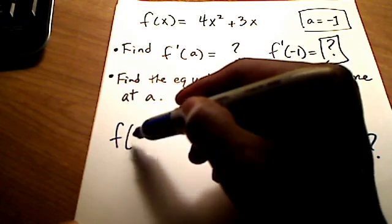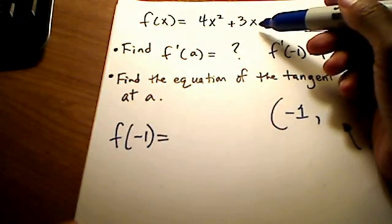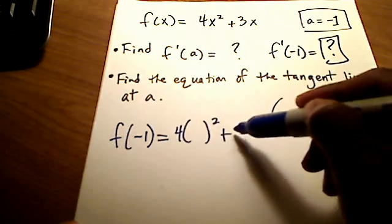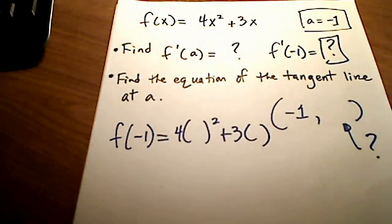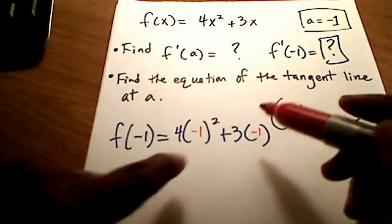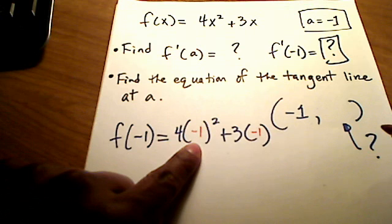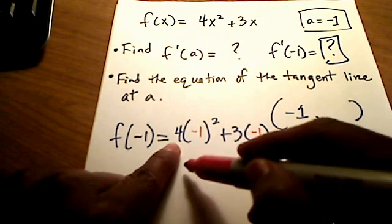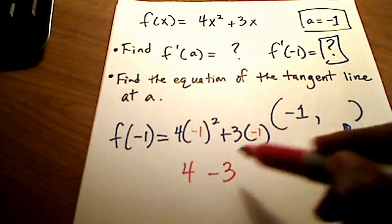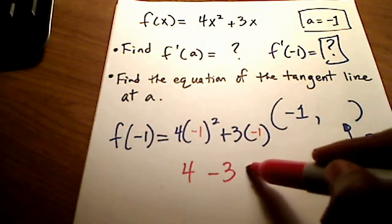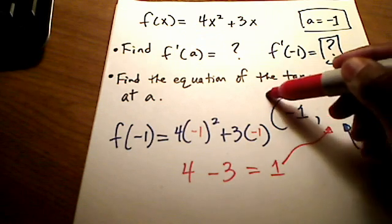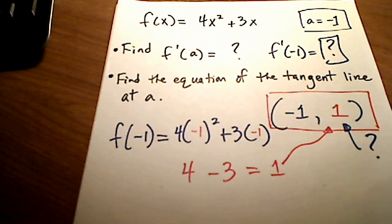But we can figure that out pretty easily by plugging in negative 1 into our original function, and that will give us what the y value is going to be. So let's just figure that out for a quick second here. Not the first derivative, but what is f of negative 1 for my original function? So I'm going to plug in, anywhere I see an x, I'm going to plug in a negative 1 and solve this thing out here.